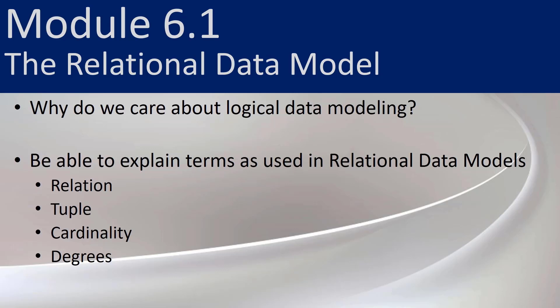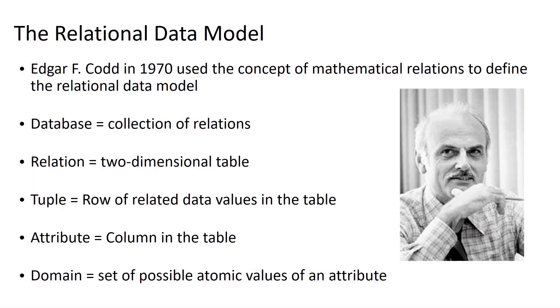In module 6.1, we're going to be changing up the way we're thinking about data modeling just a little bit as we introduce the relational data model. We're going to talk about logical data modeling and terms used in relational data modeling, such as relation, tuple, cardinality, and degrees. The relational data model is really the cornerstone of everything we talk about with regards to relational database management systems. It was proposed in 1970 by Ed Codd, who used the concept of mathematical relations to define the relational data model.